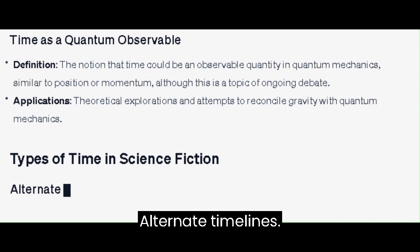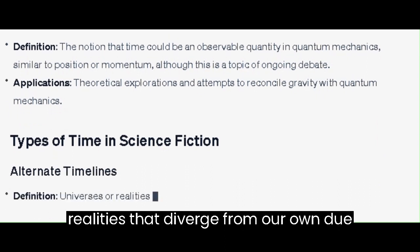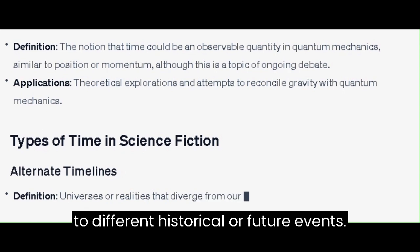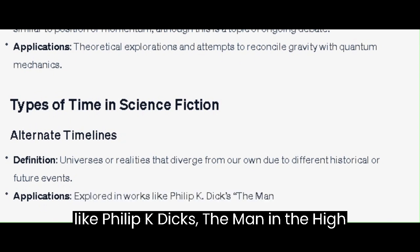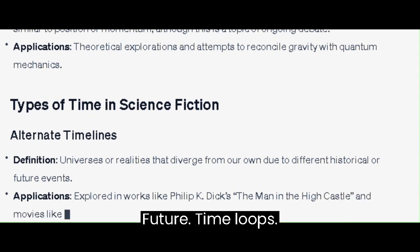Alternate timelines - universes or realities that diverge from our own due to different historical or future events. Applications: explored in works like Philip K. Dick's The Man in the High Castle and movies like Back to the Future.